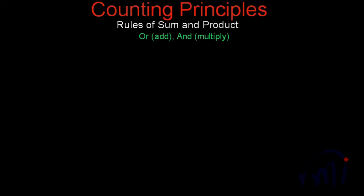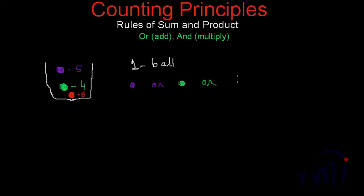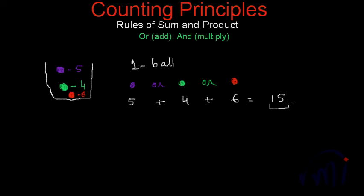Suppose you have a bag with 5 purple balls, 4 green balls, and 6 red balls, and you want to take out only one ball. How many choices do you have? You can either select a purple ball, a green ball, or a red ball. For a purple ball you have 5 choices, for a green ball you have 4 choices, and for a red ball you have 6 choices. Since there is an OR in between, you add them — so you have a total of 15 choices to select a ball.